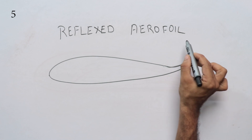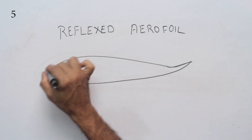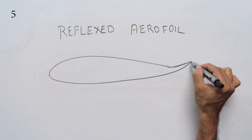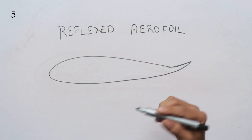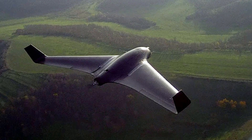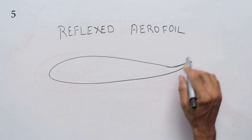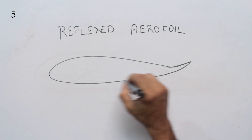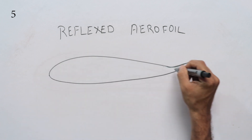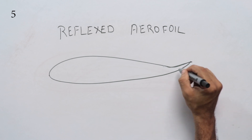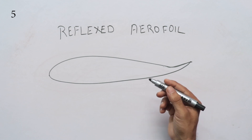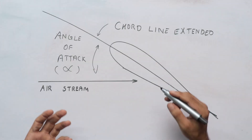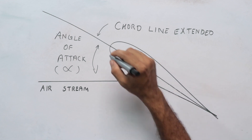Another type is the reflexed Aerofoil. You can use this Aerofoil in the tail area. This Aerofoil is suitable for flying wings — a wing-only design. It provides stability to the airfoil, and we can trim and set this shape for stability purposes.